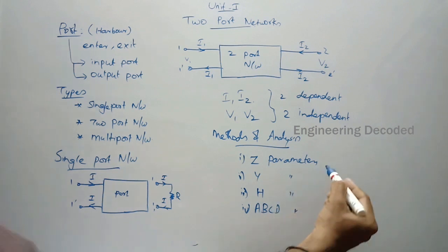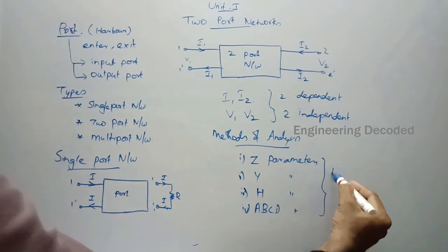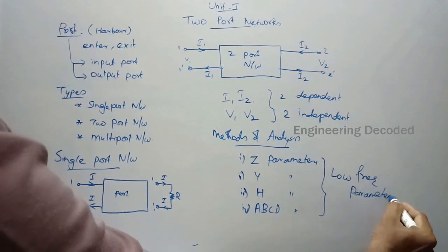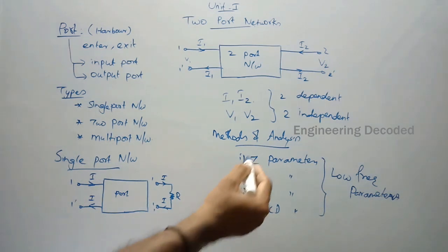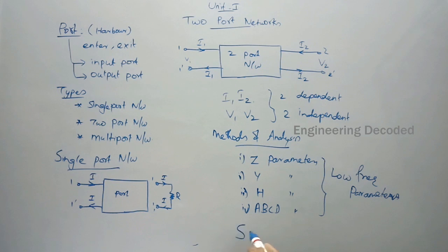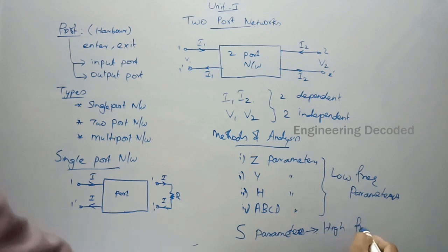All these parameters — Z, Y, H, and ABCD — are low frequency parameters. They apply only to low frequencies. If you want to analyze a two-port network having high frequency, then you need to know the S parameters. S parameters are applicable for high frequency networks.